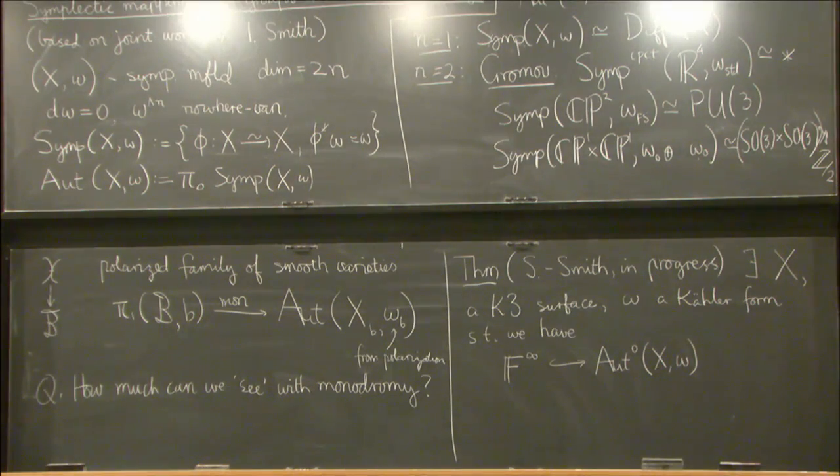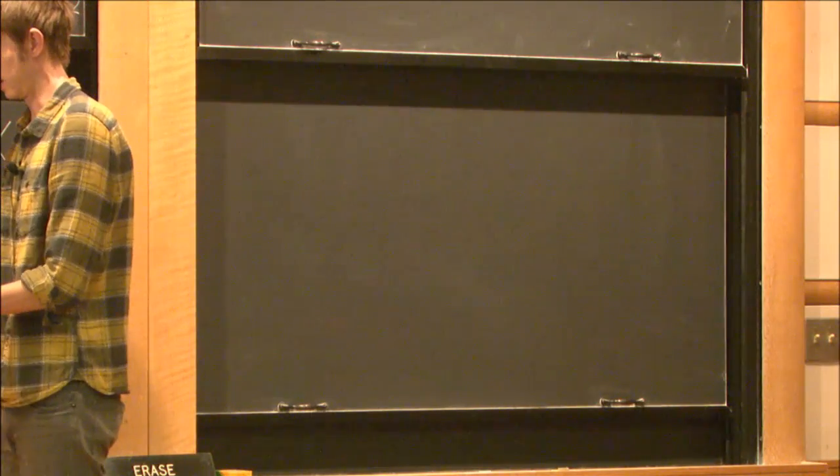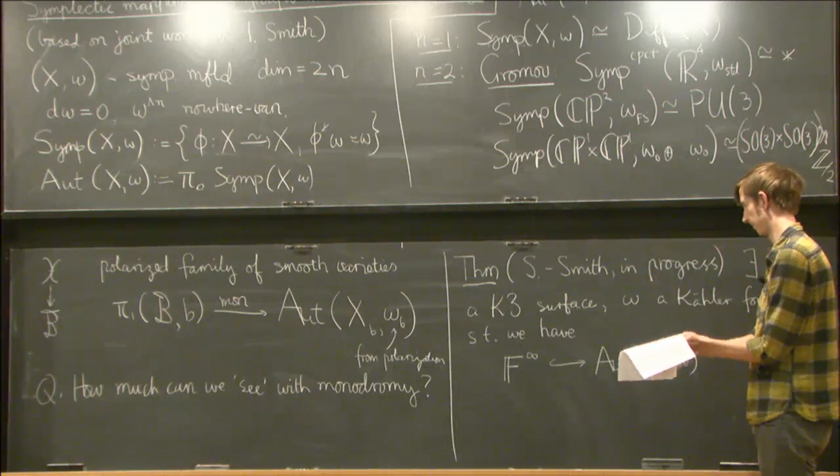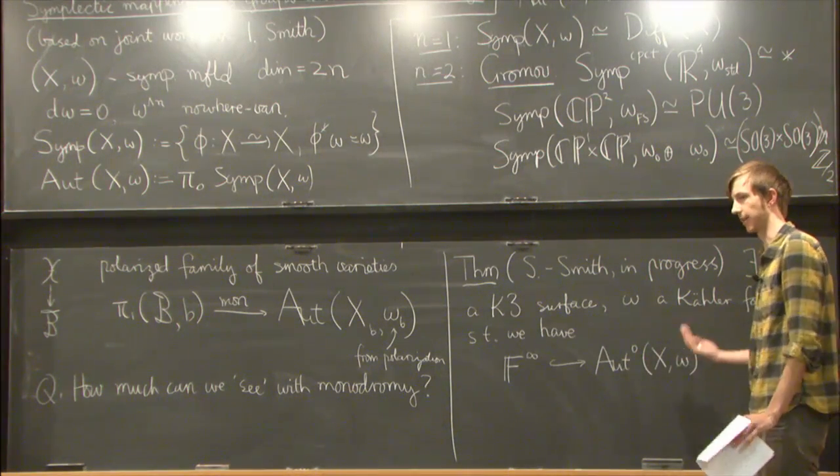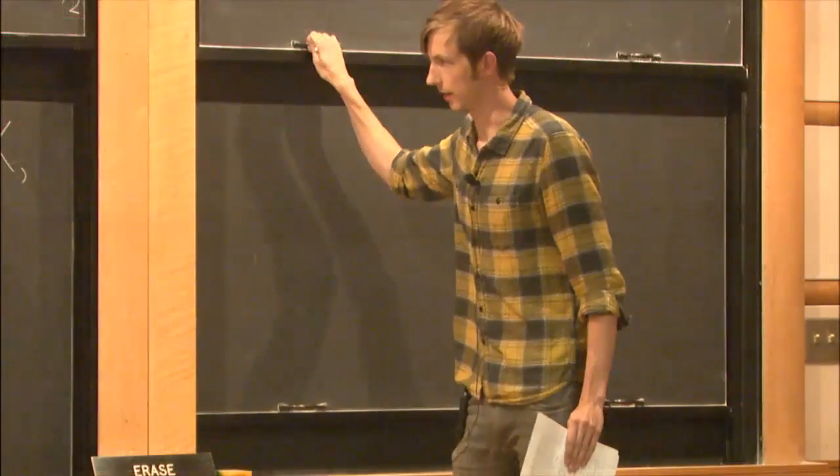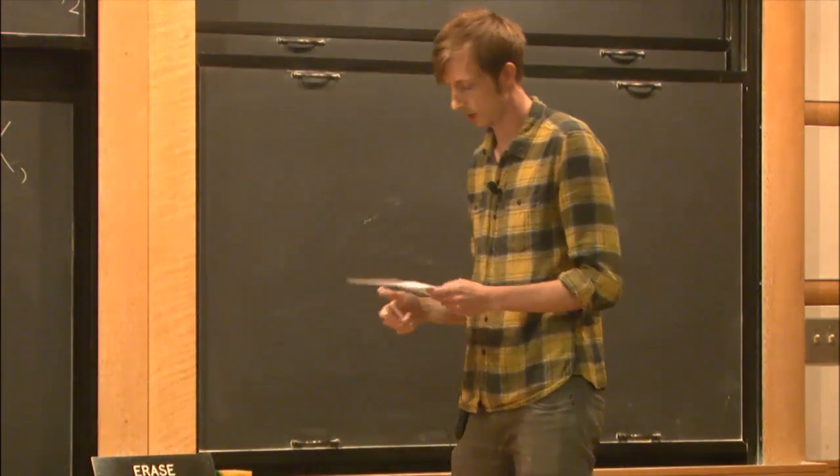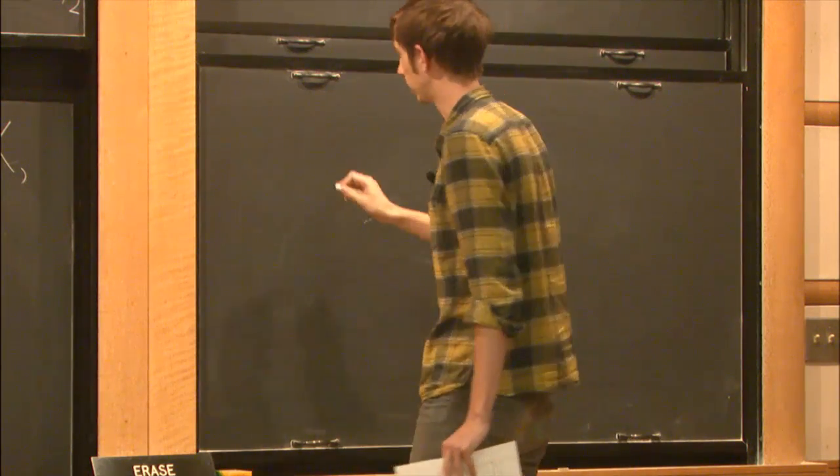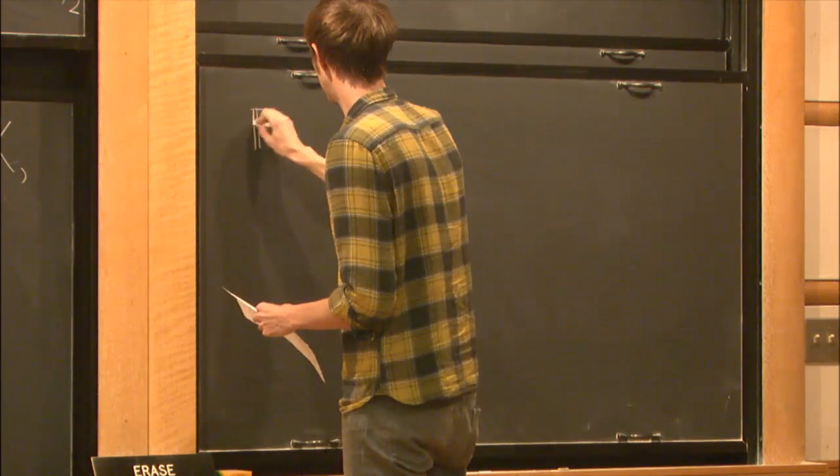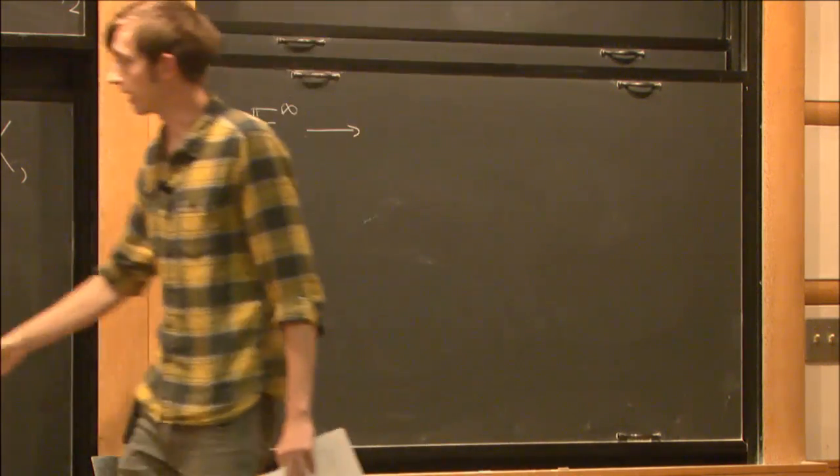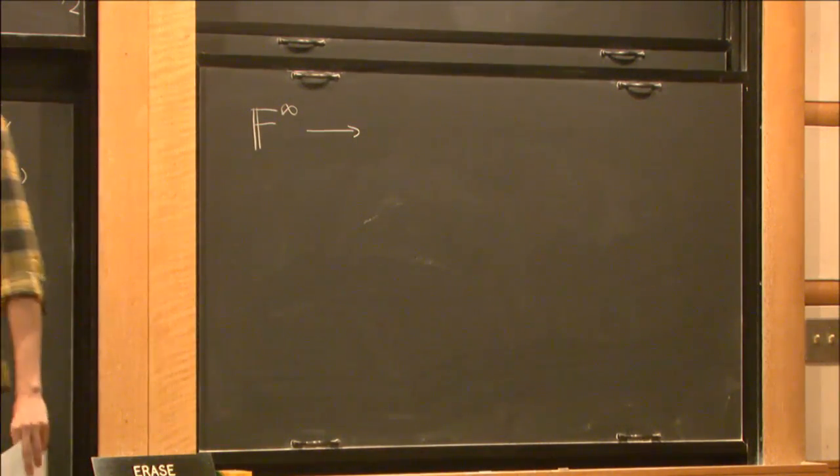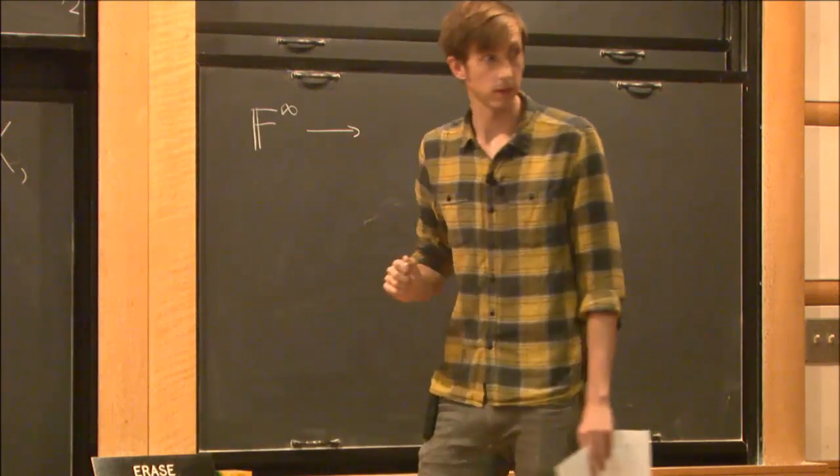Is it the Kaler form? Not necessarily, no. Yeah, in fact, there's a certain space of Kaler forms we look at and it's exactly the most irrational ones inside that space that we are able to say this about. And how does the proof look? Sorry, what is F infinity again? Infinitely generated free group. Countably? Countably infinite. Yes.